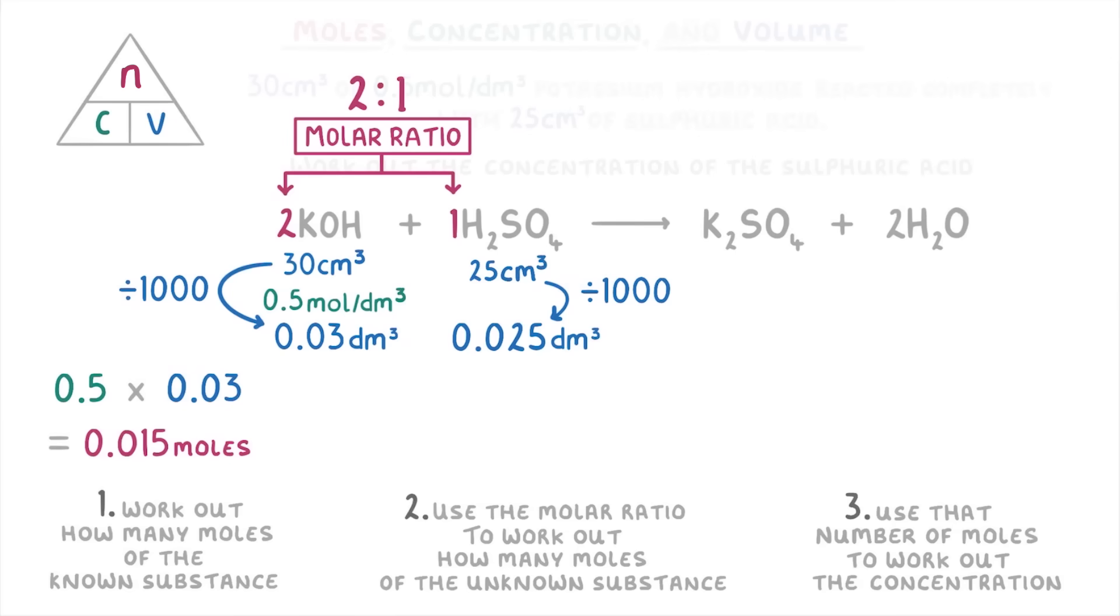So because we just worked out that we have 0.015 moles of potassium hydroxide, we're going to have to divide that by 2 to find out how many moles of sulfuric acid it reacted with, giving us 0.0075 moles of sulfuric acid.